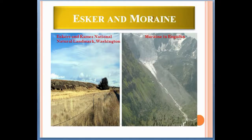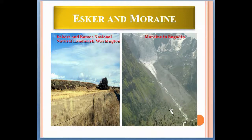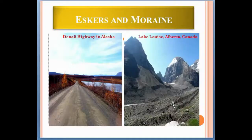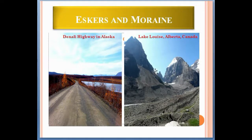Here are some examples of eskers and moraines. This is the Esker Lakes National Natural Landmark in Washington. This is a moraine in Engadin. Here is another esker — this road is actually built above an esker, this is the Denali Highway in Alaska. And this is another example of a moraine: Lake Louise.